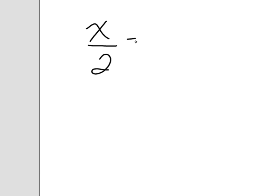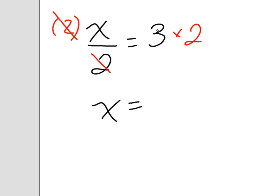What do you think you would do if the equation showed x divided by 2? Remember, the bar means divide. How do you get rid of dividing by 2? You multiply by 2. If I multiply the left side by 2, I'm left with just x, and if I multiply the right side by 2, I get 6.